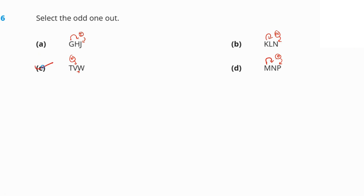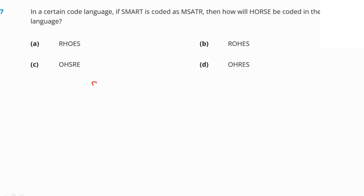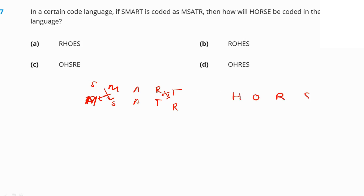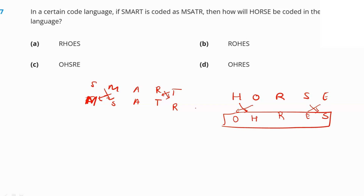In a certain code language, SMART is coded with the first two and last two letters in a crisscross manner, while the middle letter stays the same. So HORSE would be coded as O-H-R-E-S — the first two letters H and O swap, the middle R stays, and the last two letters S and E swap. Option D, OHRES, is our correct answer.